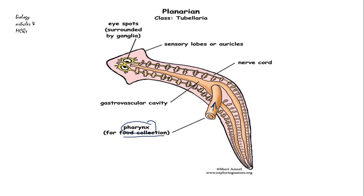When the food enters the pharynx, the pumping activity of the pharynx breaks it down into small pieces — this is especially needed if the prey is very large. In addition to the pumping action, the pharynx also secretes some enzymes, and extracellular digestion of the prey starts here.